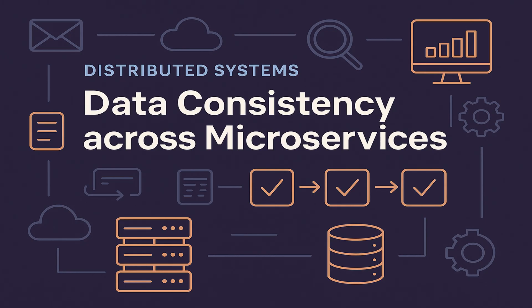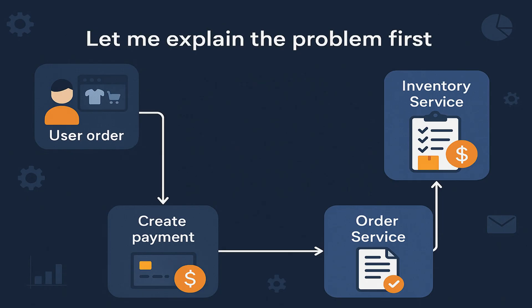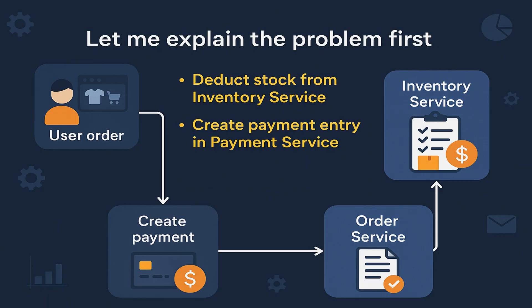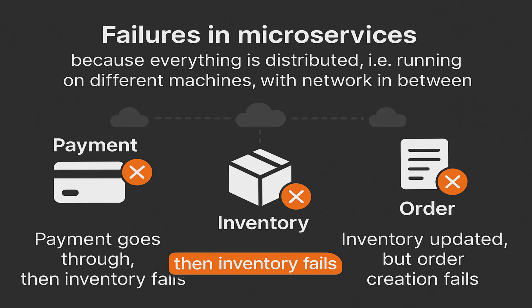Let me explain the problem first. Let's say a user places an order. That one request needs to first deduct the stock from the inventory service, then create a payment entry in the payment service, and finally create an order record in the order service. Now all three of these steps need to succeed for an order to be valid. But what if a payment goes through and the inventory update fails, or the inventory is updated but order creation fails?